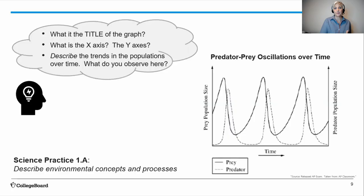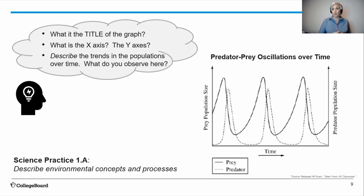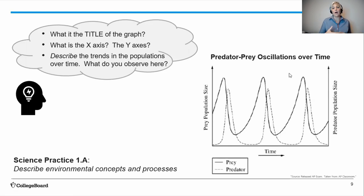Let's do some practice. We're looking at a graphical stimulus pulled from AP resources. When approaching a graphical stimulus in AP Environmental Science, the first thing to look at is the title of the graph. Here, the title is 'Predator-Prey Oscillations Over Time.' The title can tell you a lot about what's going on. To oscillate means to go up and down, or have a regular periodic peak and valley over a certain time period.